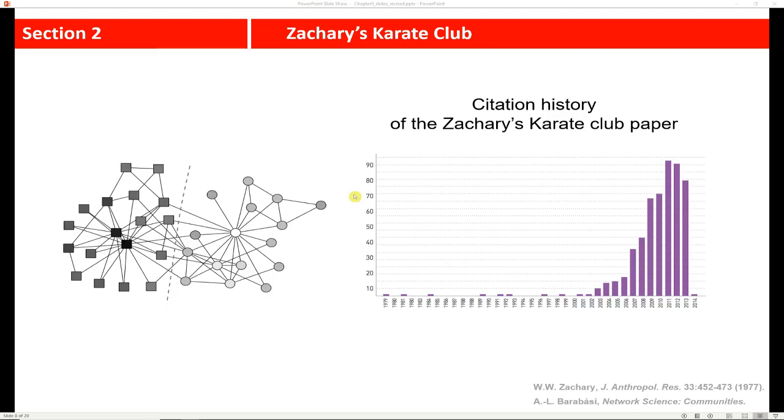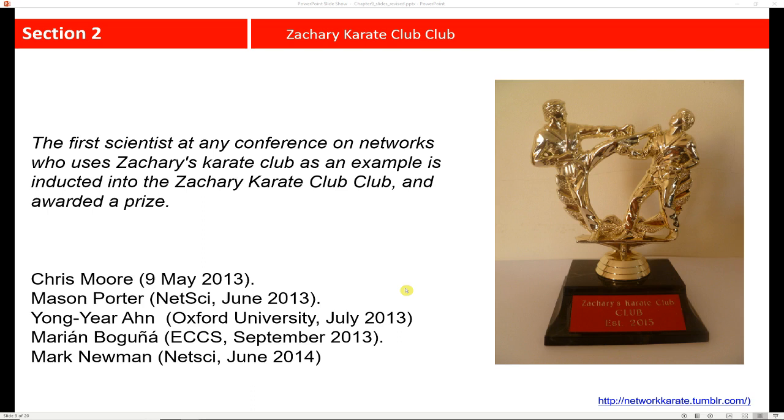And actually, the Karate Club paper is a very famous paper in social network analysis. See that it's been cited a lot of different times. And the first scientist at any conference on networks who uses Zachary's Karate Club as an example is inducted into what's called the Zachary Karate Club Club and is given a little prize. And so it's kind of silly, but it's a point of pride among the social network researchers.